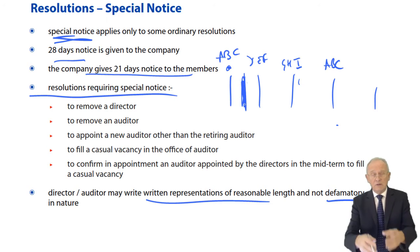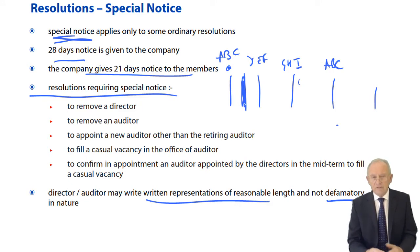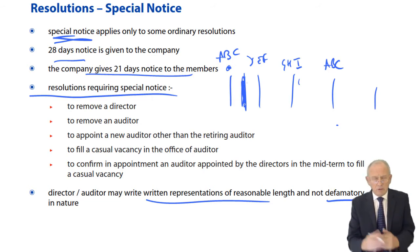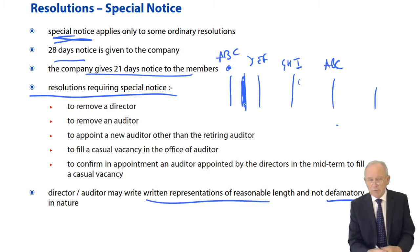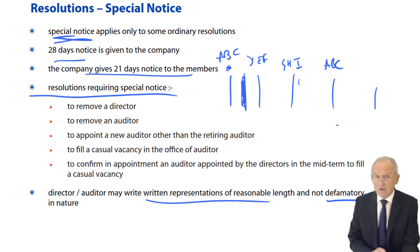So we send notice to the company saying we wish to have a resolution put on the agenda of a general meeting to discuss, and if thought fit, to remove Mr B as a director before the expiration of his term of office. The company will then notify the director: sorry Brian, but you've been proposed for removal by special notice of an ordinary resolution — please send your written representations of reasonable length and not defamatory in nature within the next few days, and we'll circulate them with the notice of the meeting.